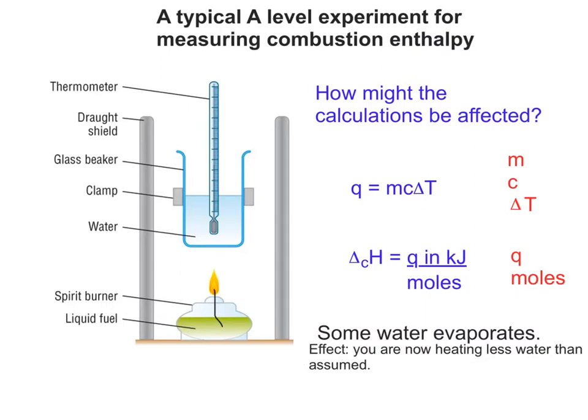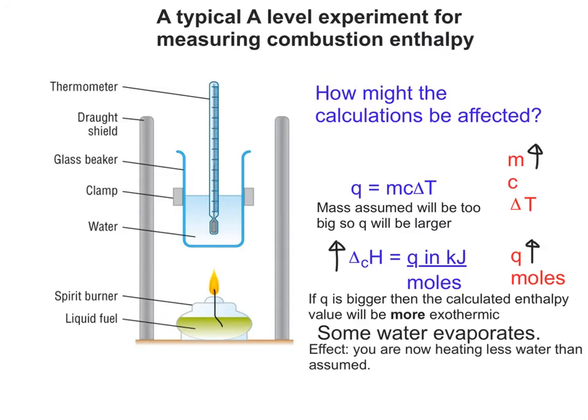So let's now look at the effect of some water evaporating. Basically you're now heating less water than you originally assumed, so that's going to affect Q = mcΔT. The mass you're assuming you're using will be too big because some of the water will have gone, so Q will be bigger than it should be, and you end up with a more exothermic value for ΔcH. Notice I didn't say bigger — I said more exothermic. It's important to make that distinction.